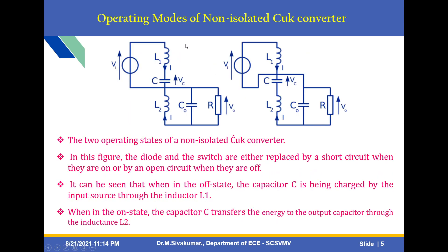There are two operating modes for the non-isolated Ćuk converter. In this figure, the diode and switch are replaced by a short circuit when on, or an open circuit when off. When in the off state, capacitor C is charged by the input source through inductor L1. When in the on state, capacitor C transfers energy to the output capacitor through inductor L2. These operating modes are continuous mode and discontinuous mode.